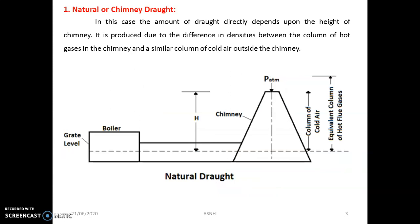The first type is natural draft, also called chimney draft. In this case, the amount of draft is directly dependent on the height of the chimney. It is produced due to the difference in density between the column of hot gases in the chimney and a similar column of cold air outside the chimney. In the boiler furnace, the grate is the area where combustion of fuel takes place, and the flue gases produced continuously move through the chimney and are exhausted to the atmosphere. No pump, blower, or fan is used — because of the density difference, air moves naturally. That is why it is called natural or chimney draft.